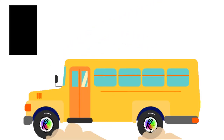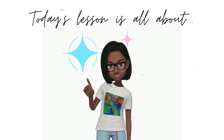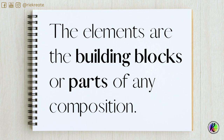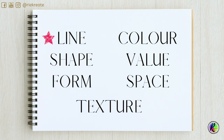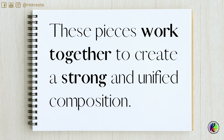Welcome to another art school video. Today's lesson is all about the elements of art. The elements are the building blocks or parts of any composition. They are line, shape, form, color, value, space, and texture. These pieces work together to create a strong and unified composition.